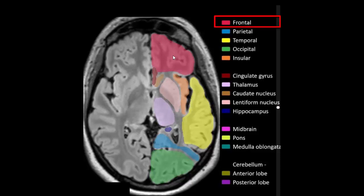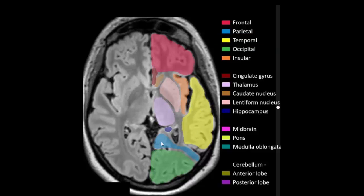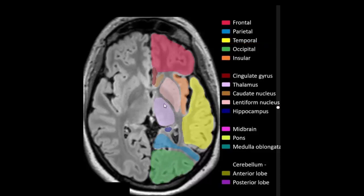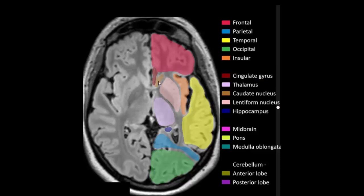Frontal lobe, temporal lobe, parietal lobe, occipital lobe, thalamus, lentiform nucleus, cingulate gyrus.